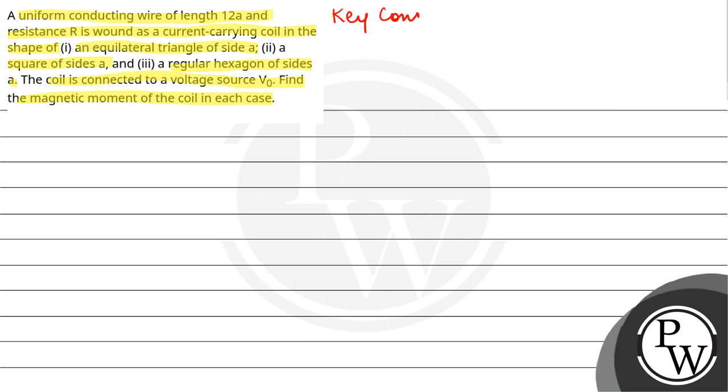Here our key concept is magnetic dipole moment is given by the relation M = NIA, where N is number of turns, I is current flowing, and A is the surface area.